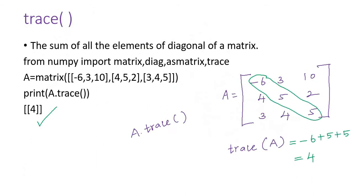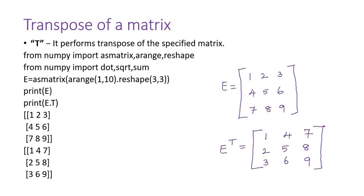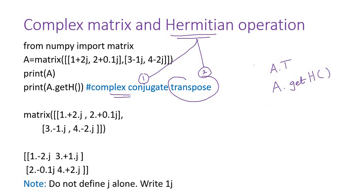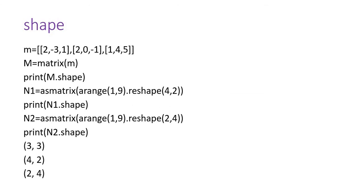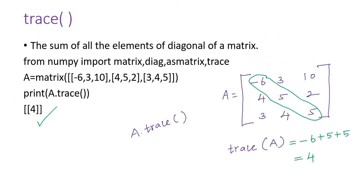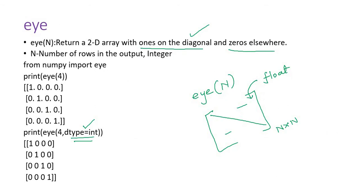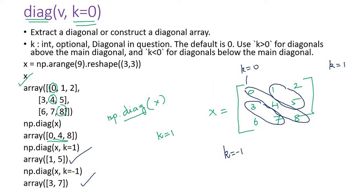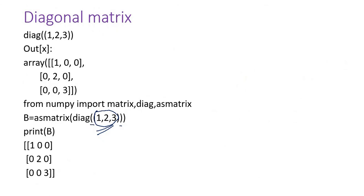In this video, we discussed how to take the transpose of a matrix, how to generate a complex matrix, the Hermitian operation, what shape is and how to find the number of rows and columns, how to collapse a multi-dimensional matrix into a single-dimensional matrix using the flatten command, then trace, identity matrix, zero matrix, ones matrix, and diagonal — how to extract diagonal elements including above and below the main diagonal using the k parameter, and how to create a diagonal matrix.